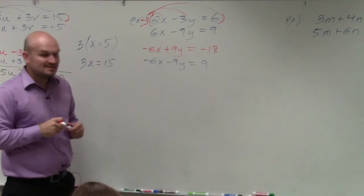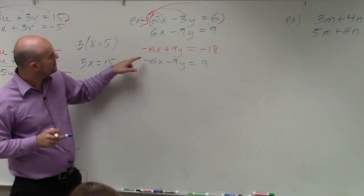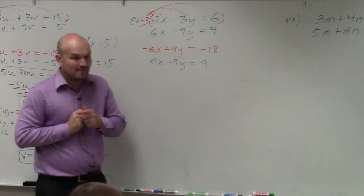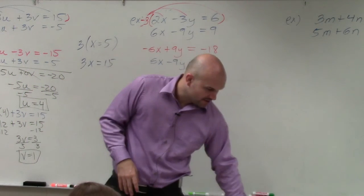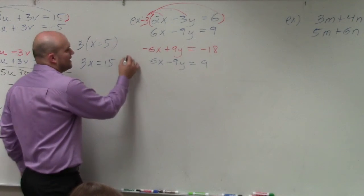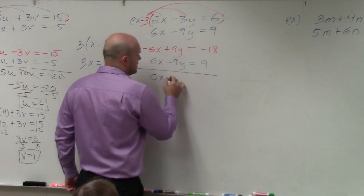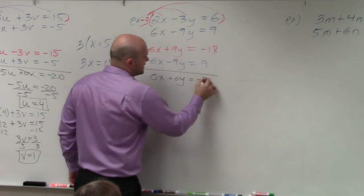And as some of you noticed, now I have a positive—oops, that should be positive. So now, as you guys should notice, I have a positive and negative. They're exactly the same. So I want to add. So you go ahead and add the two equations. And what you notice is you have 0x plus 0y equals negative 9.